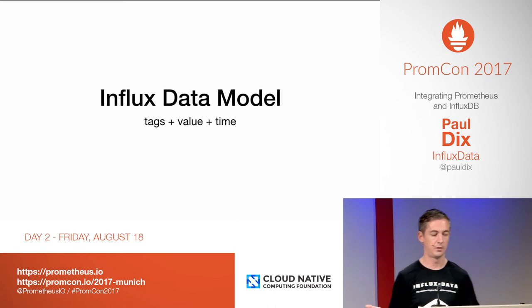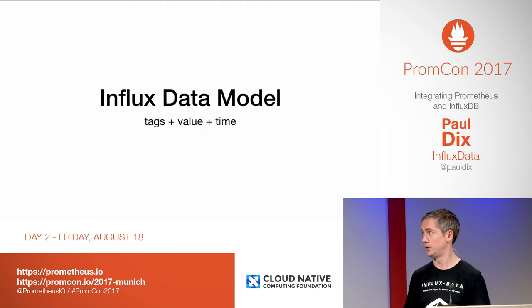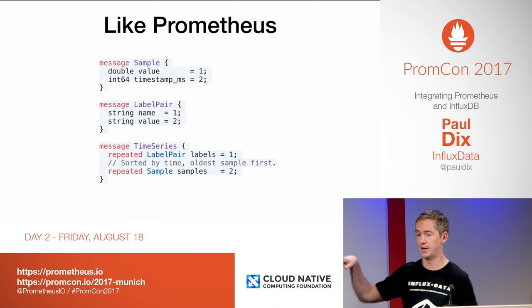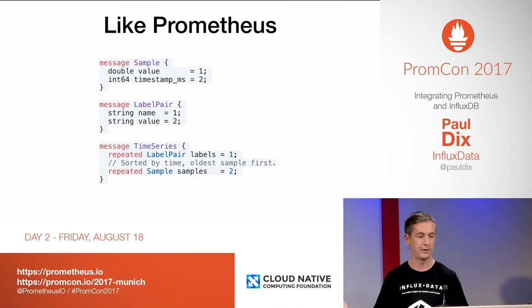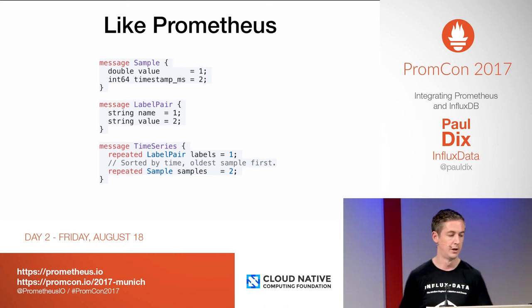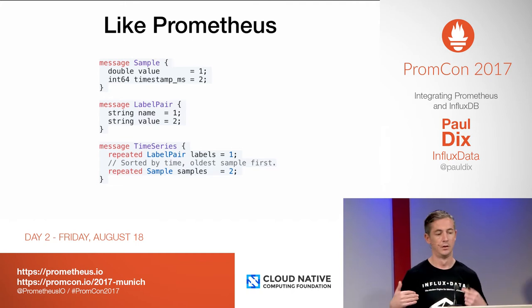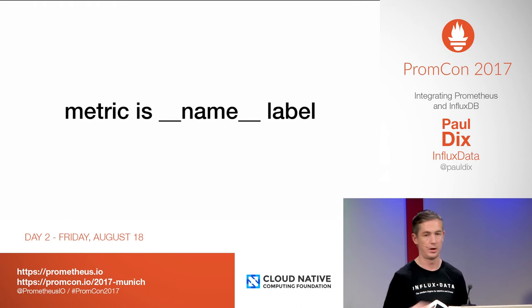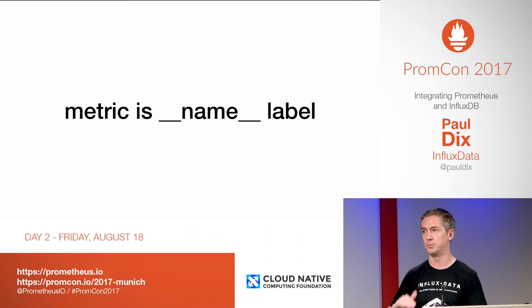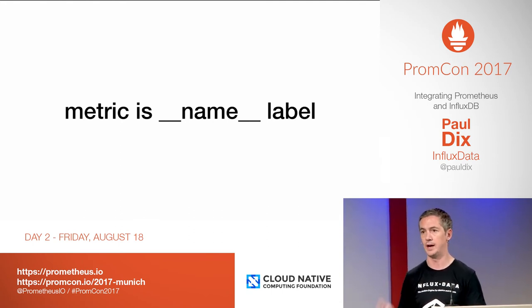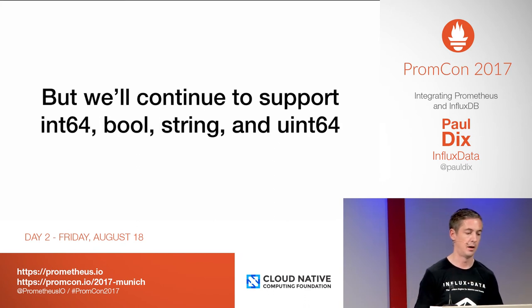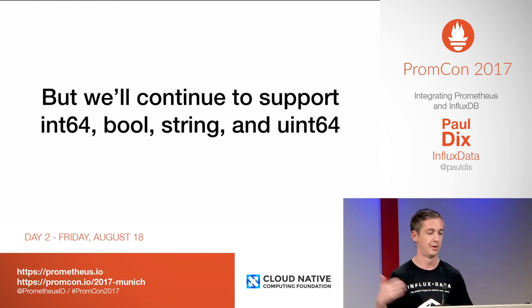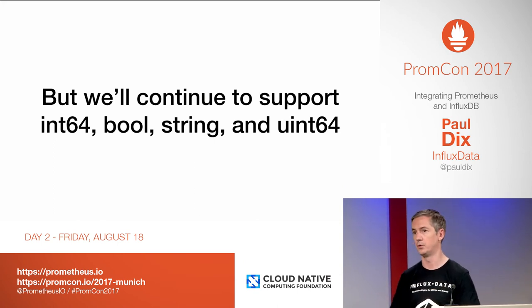We're going to be changing our data model. We can represent our old data model using the new one. The new data model is basically just tags, a value, and a time - very much like Prometheus. In the remote proto definition, you have a sample which is a value and timestamp, and a time series is a collection of label pairs plus samples. For Prometheus compatibility we'll have `__metric__`; for InfluxDB 1.x compatibility we'll have `__measurement__`. We'll basically represent both models. But we'll continue supporting multiple data types, not just float64, because we have other use cases that require that.